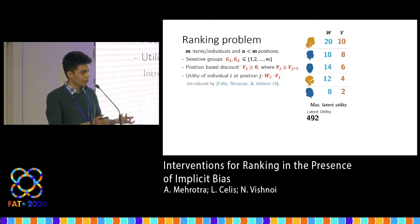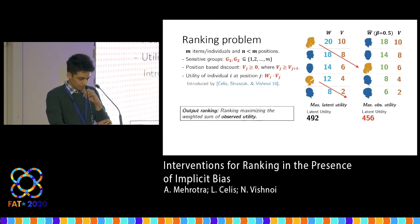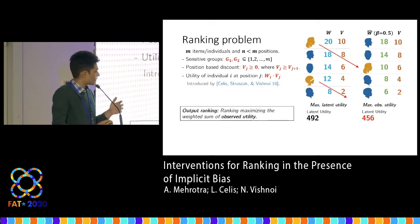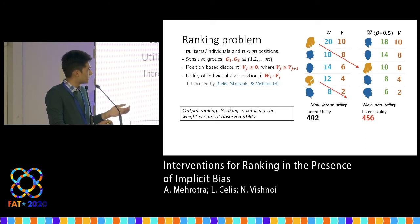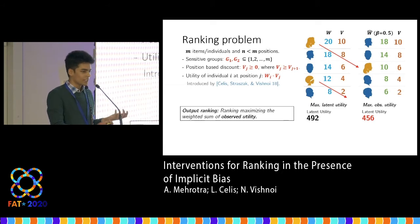Ideally, if we knew the latent or true utilities of the individuals, we could just sort them according to those utilities. However, we only have a biased version of them, and so traditionally the outputted ranking tries to maximize the sum of observed utilities. The ranking which maximizes observed utility tends to place underprivileged candidates later in the ranking rather than earlier. While the person generating this ranking thinks they are getting optimal utility, as shown in the example, they are actually losing out on a large fraction of the true optimal utility.